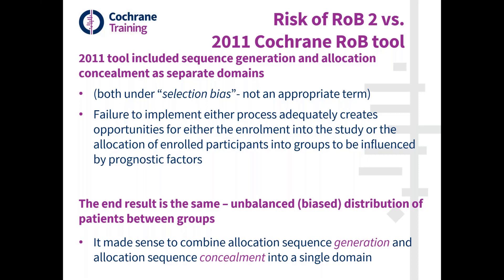The 2011 tool included sequence generation and allocation concealment as separate domains, and they were both under the heading of selection bias.